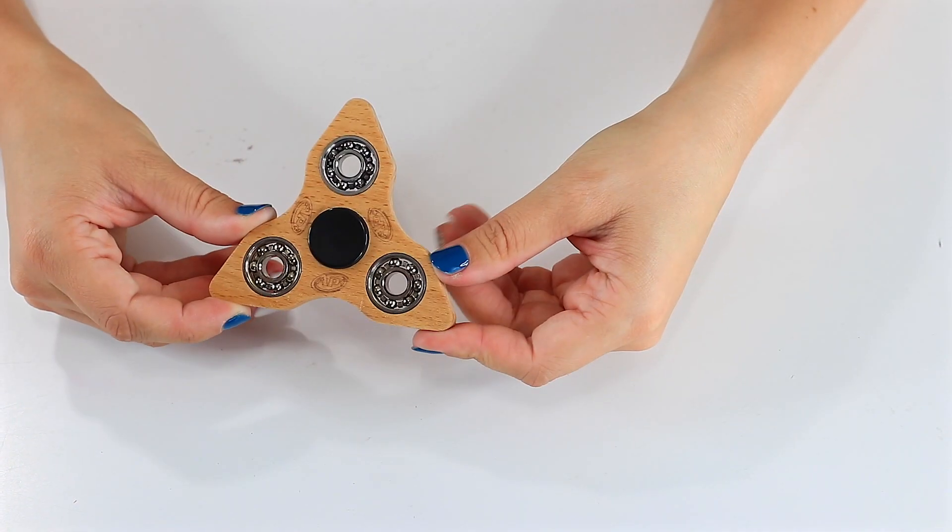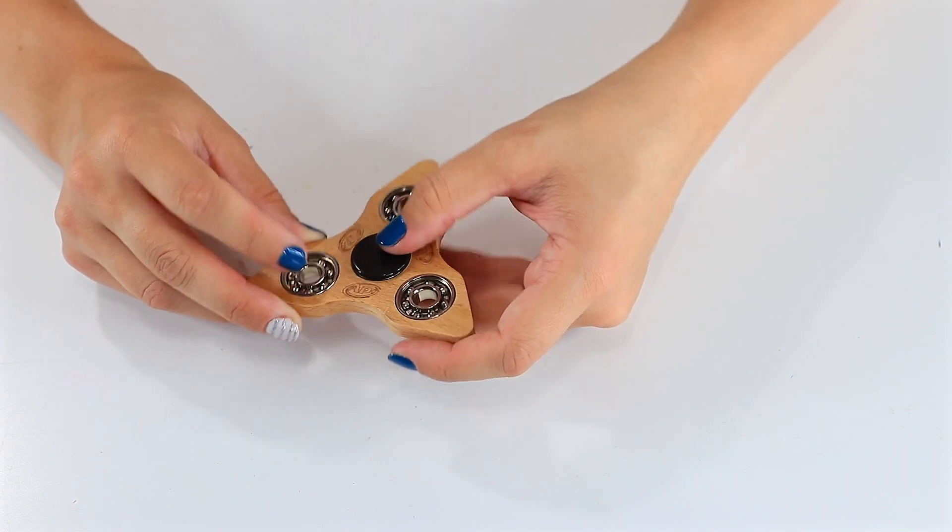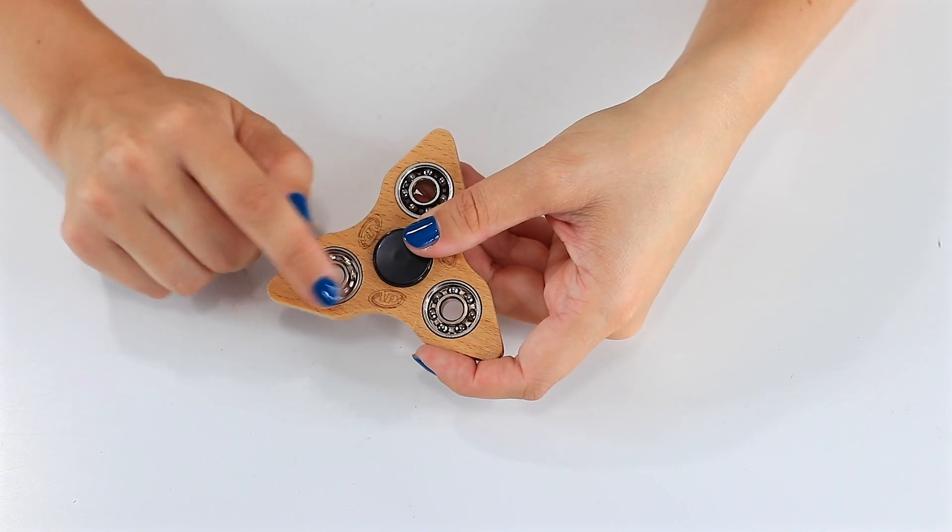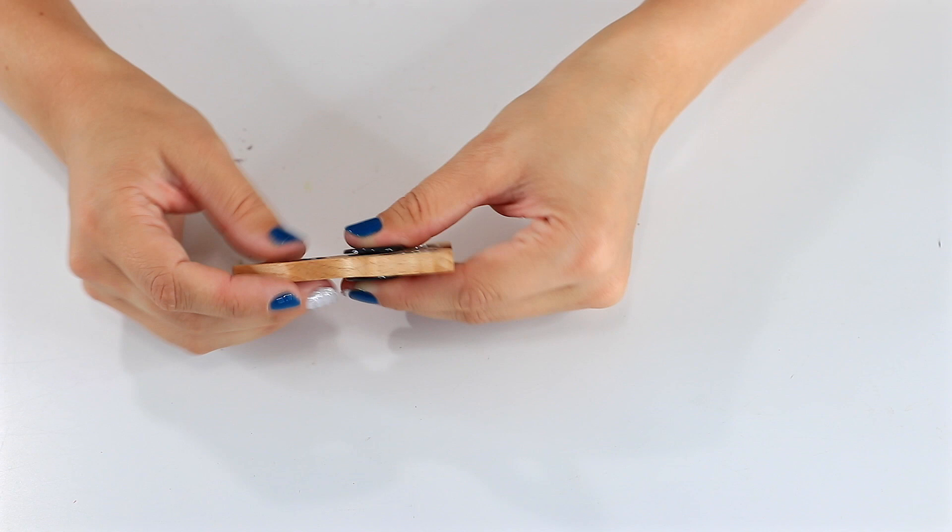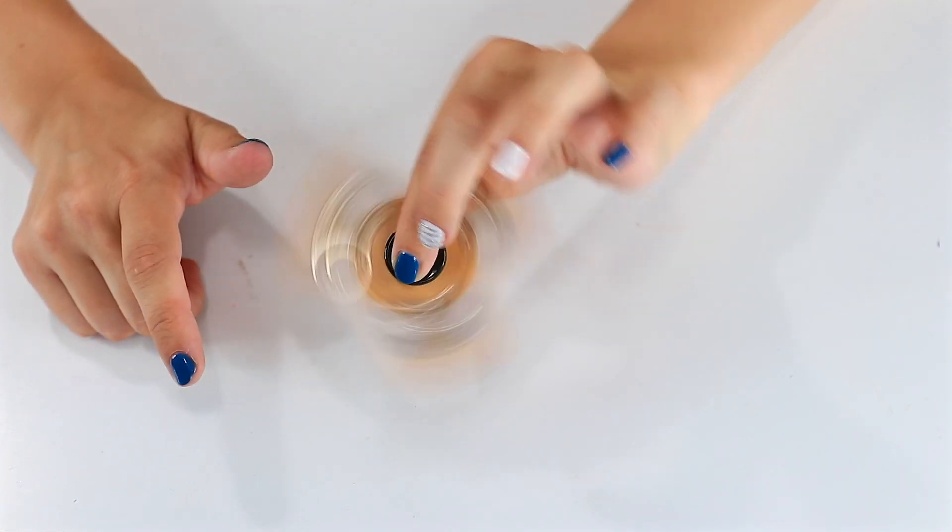So, as you can see, it's triangle tri-spinner shaped black center bearing caps and weighted ball bearings in each of the tri areas. It is solid wood, though, and let's see how it spins.